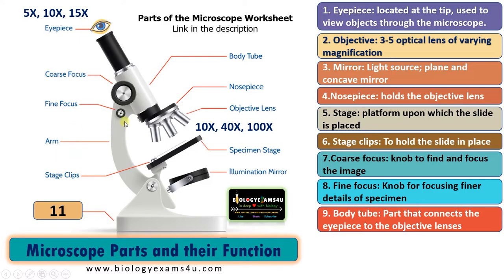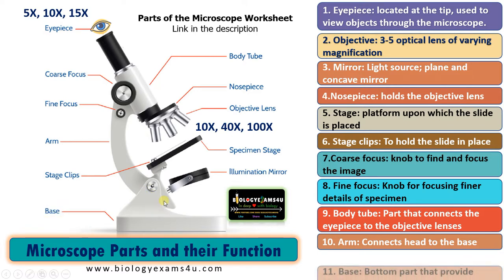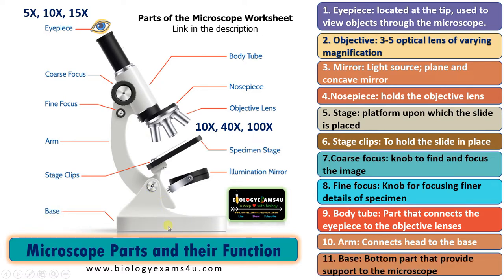The next part is the arm. The arm connects the head part — with the eyepiece and objective — to the base part, and also helps in holding the microscope properly. The final part is the base. The base is the bottom part of the microscope that provides support. In modern compound microscopes, we have artificial light illumination that is often included in the base region of the microscope.